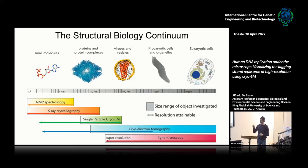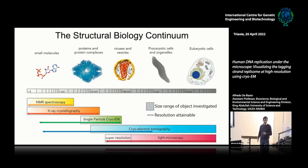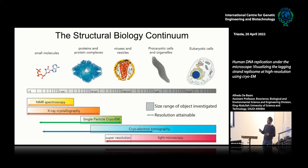Biological structures span a large range of sizes, going from small molecules, proteins and protein complexes, vesicles, viruses, organelles, up to cells and tissues. There are different tools to investigate these biological structures, tools that have different ranges of object size investigated and resolution that can be attained.